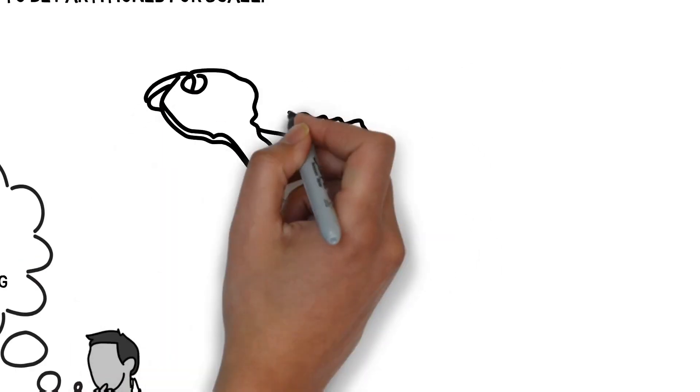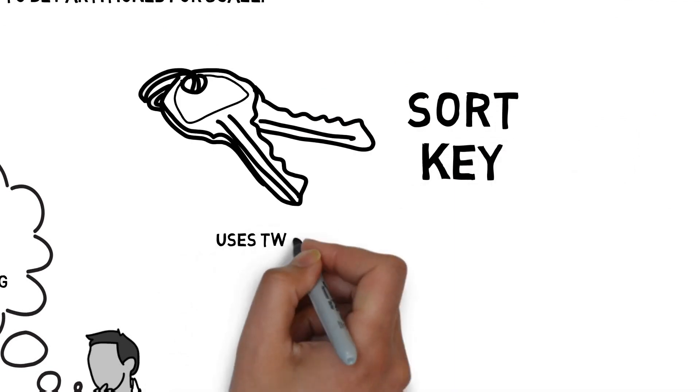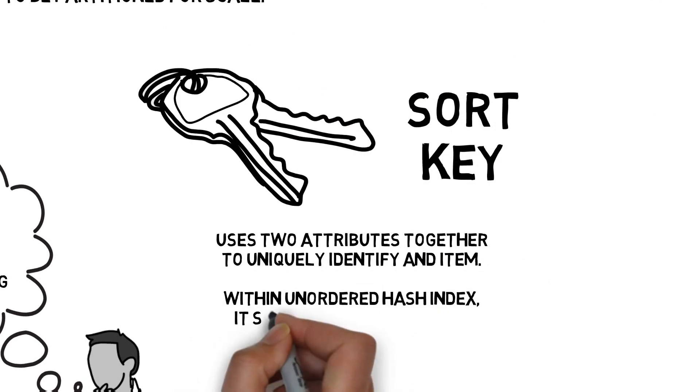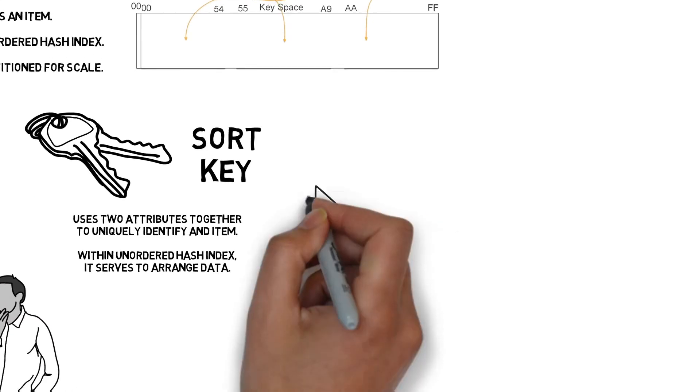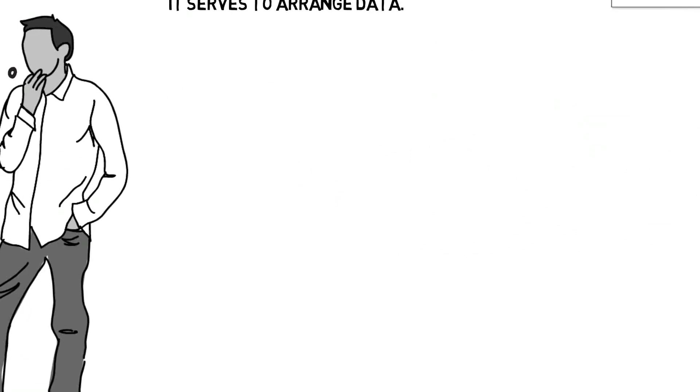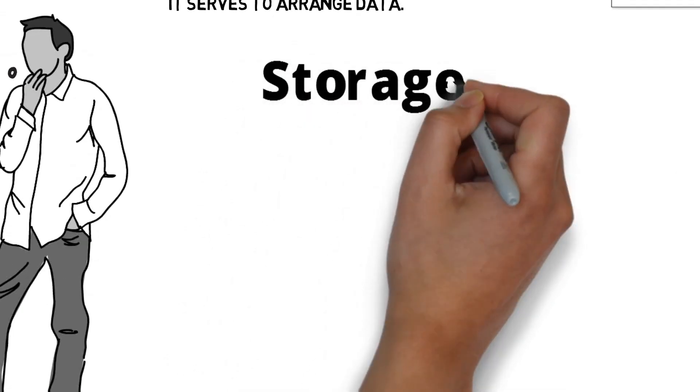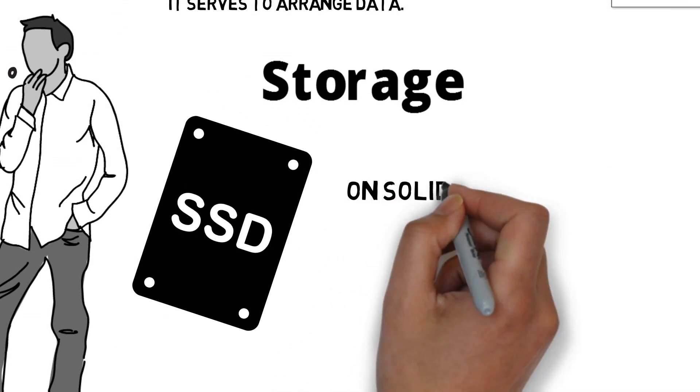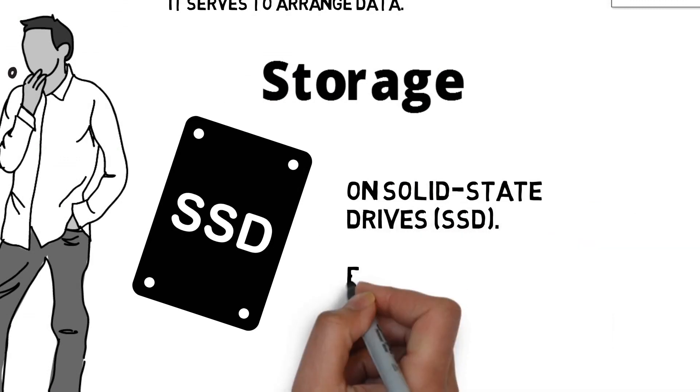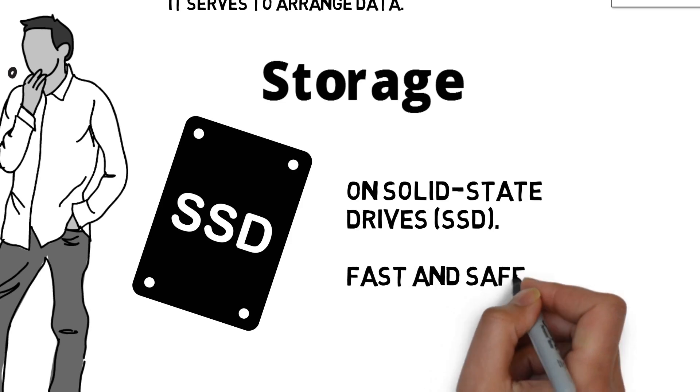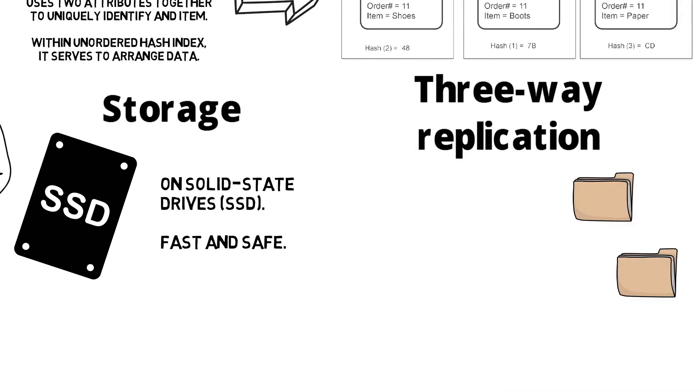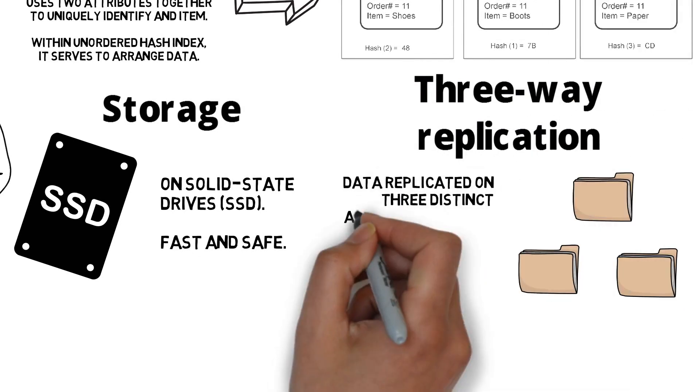Sorting keys use two attributes together to uniquely identify an item with an unordered hash index. It serves to arrange data. Let's talk about how these tables are stored. The storage of a DynamoDB table is on solid state drives or SSDs, meaning it's fast and safe. Data is replicated on three distinct availability zones, meaning we have more accurate writes and reads with stronger consistency.